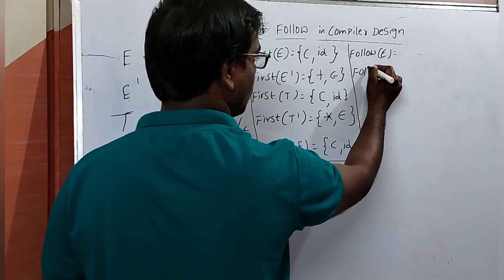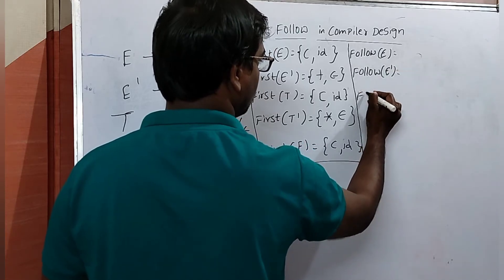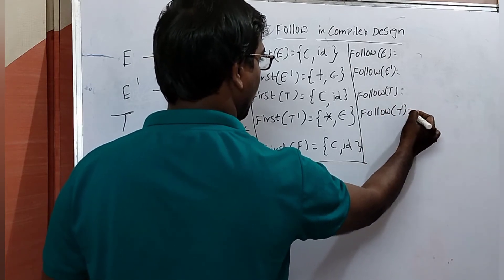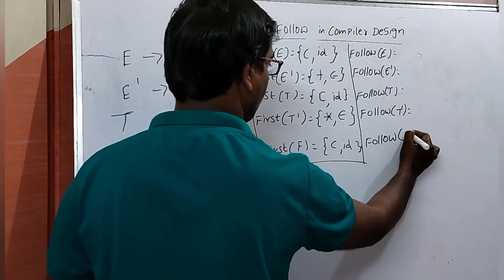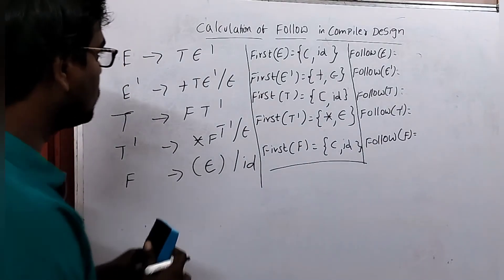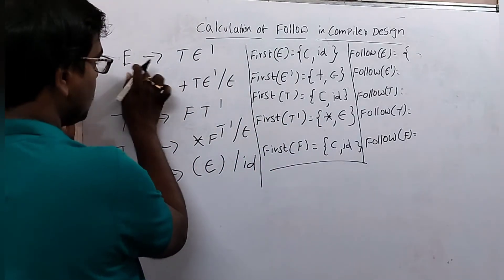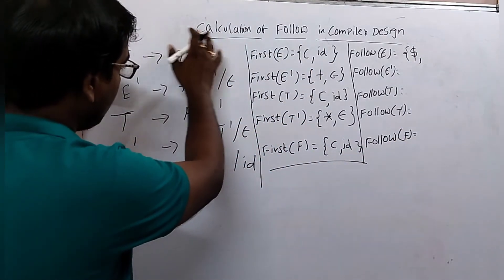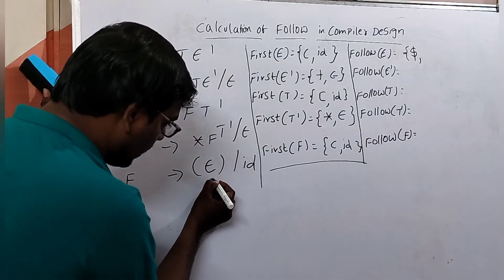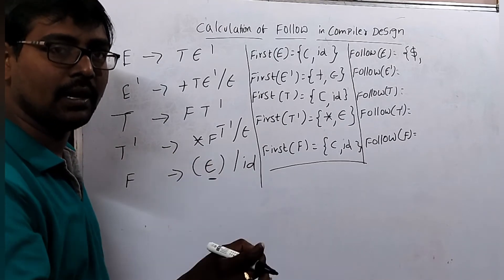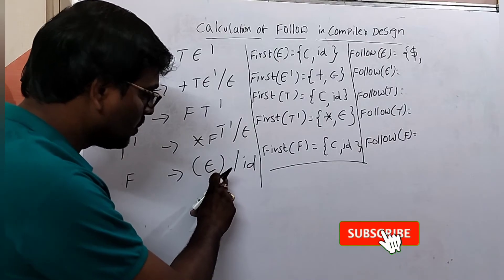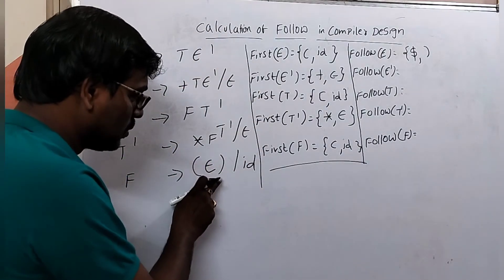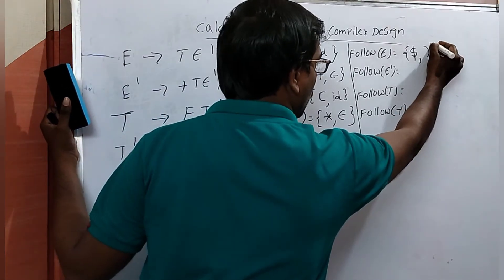Calculate FOLLOW of E, E', T, T', and F for all non-terminals in the grammar. FOLLOW of E: by default, E is the start symbol, so it contains dollar. Also, E appears inside F → (E), and after E the next symbol is ')' which is a terminal, so FOLLOW of E = {$, )}.